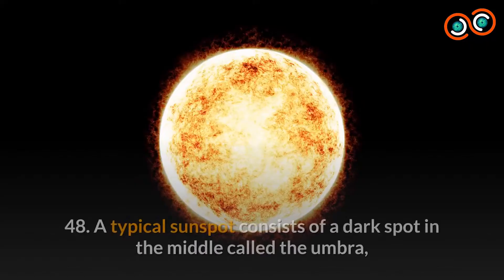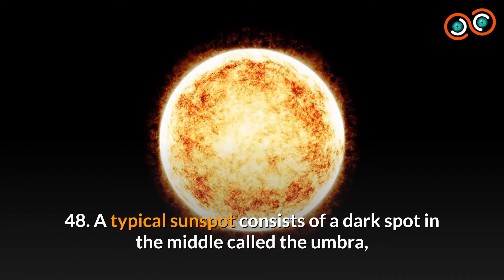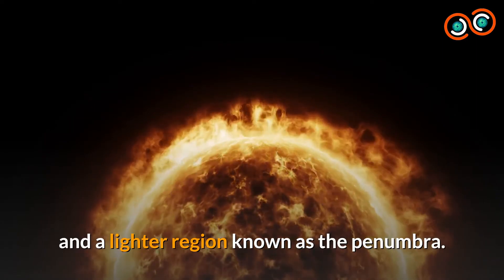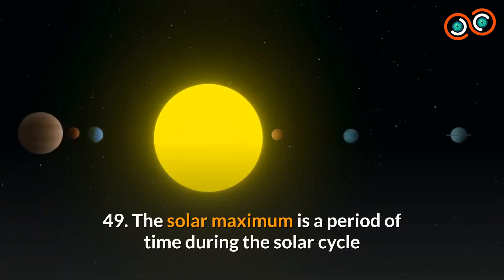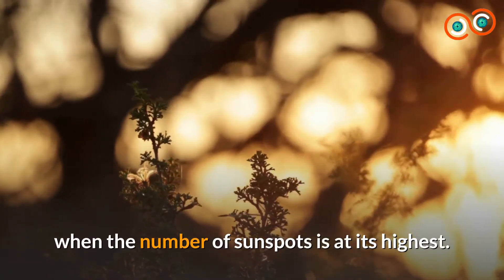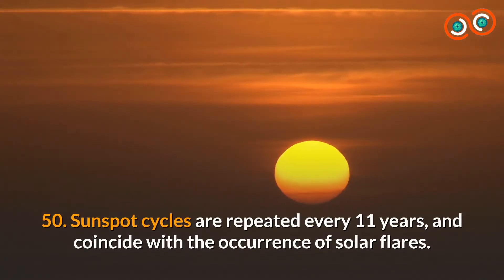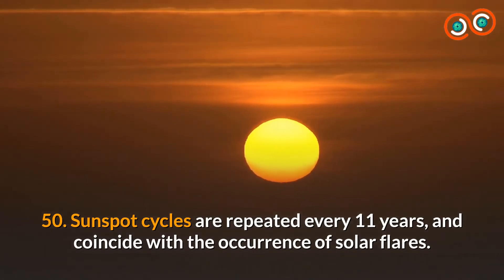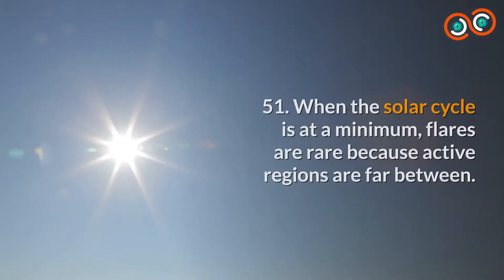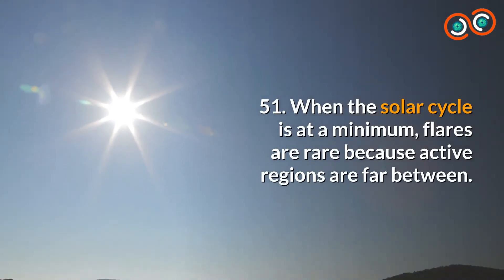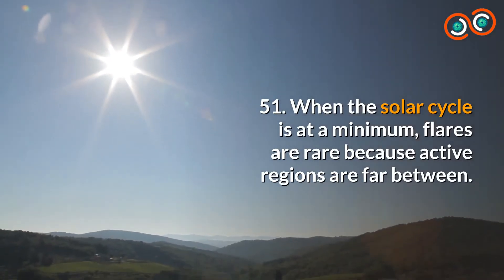47. In fact, the Sun is about 400 times larger than the Moon. 48. A typical sunspot consists of a dark spot in the middle called the umbra, and a lighter region known as the penumbra. 49. The solar maximum is a period of time during the solar cycle when the number of sunspots is at its highest. 50. Sunspot cycles are repeated every 11 years and coincide with the occurrence of solar flares. 51. When the solar cycle is at a minimum, flares are rare because active regions are far between.